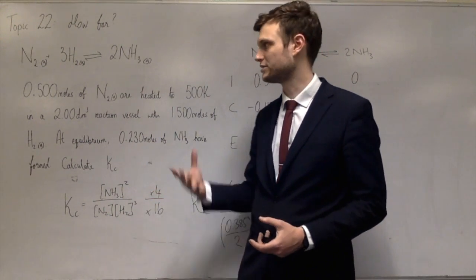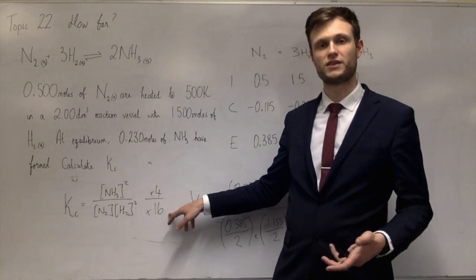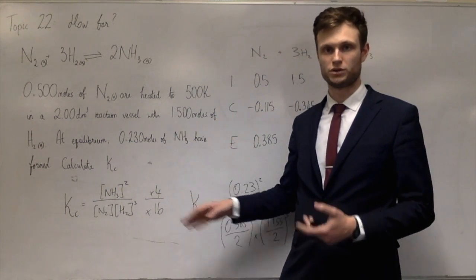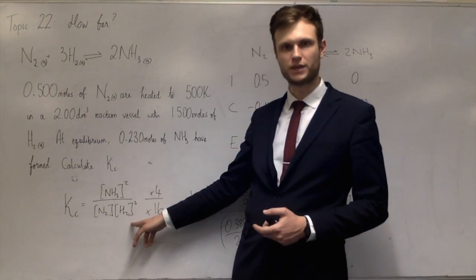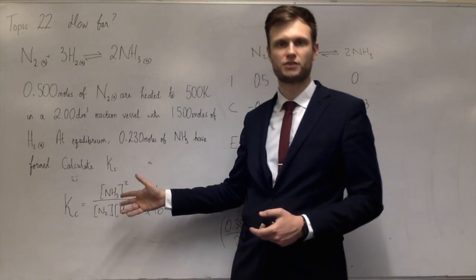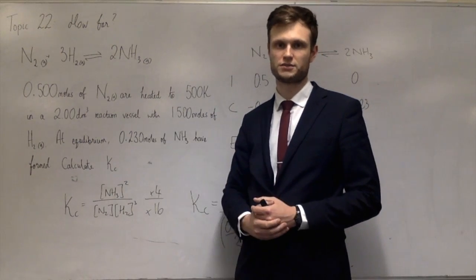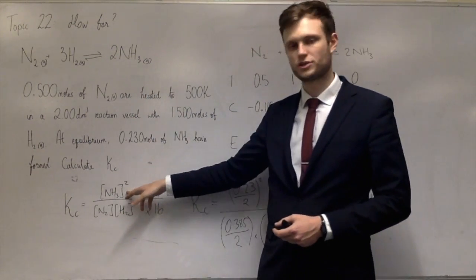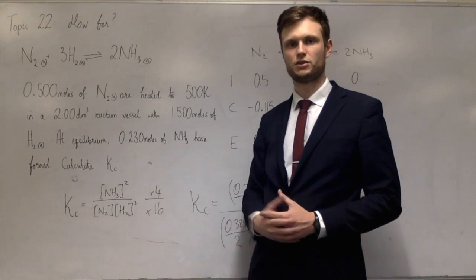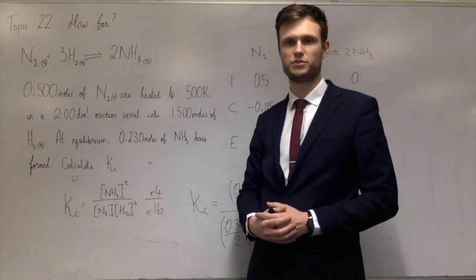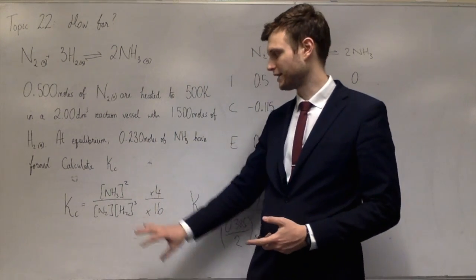A similar explanation works for decreasing pressure — it would shift equilibrium left. Adding reactants, such as more hydrogen, increases the denominator while the numerator is unchanged, so to keep KC constant the equilibrium shifts right. Similarly, removing ammonia decreases the numerator, so to keep KC constant the equilibrium must shift right — increasing the numerator and decreasing the denominator.